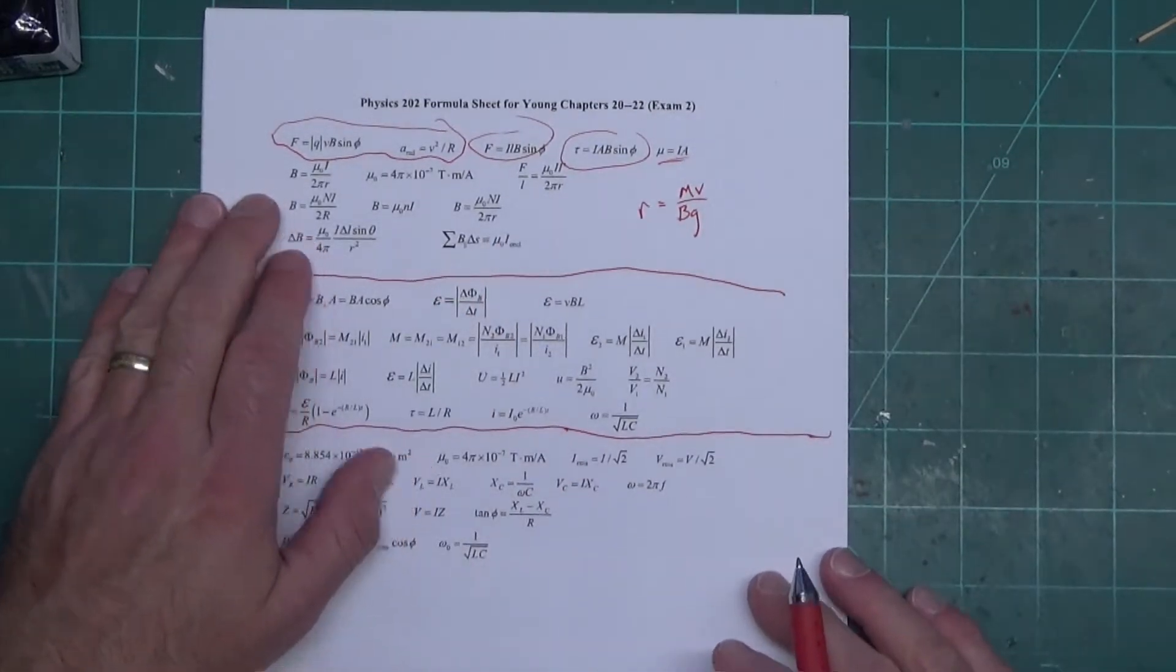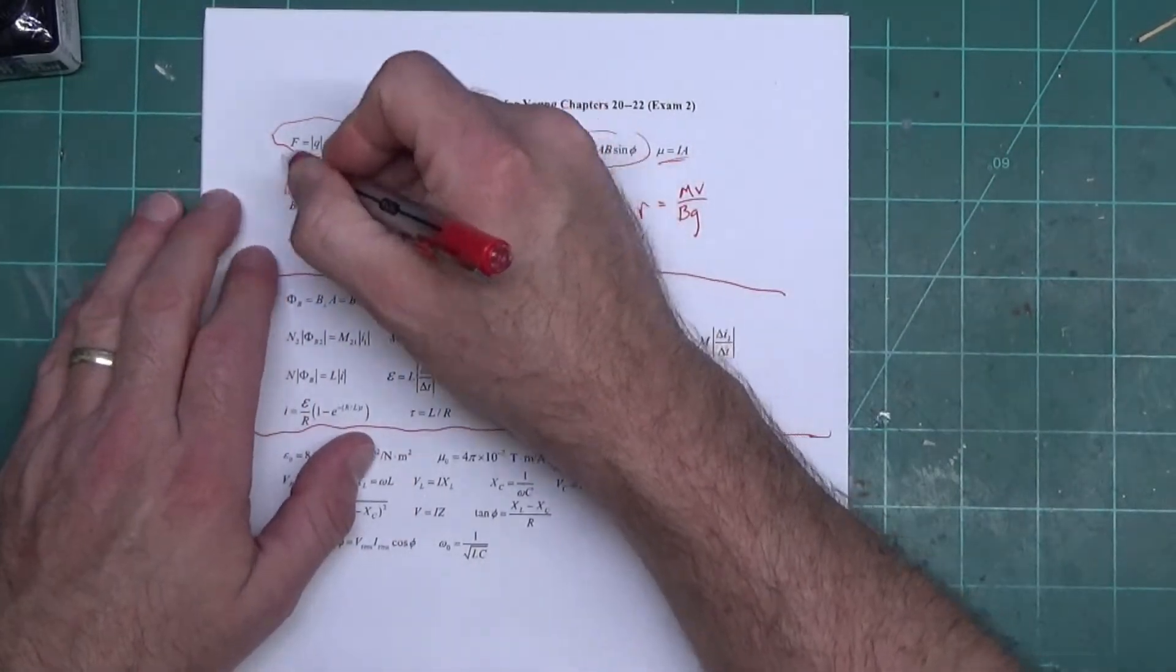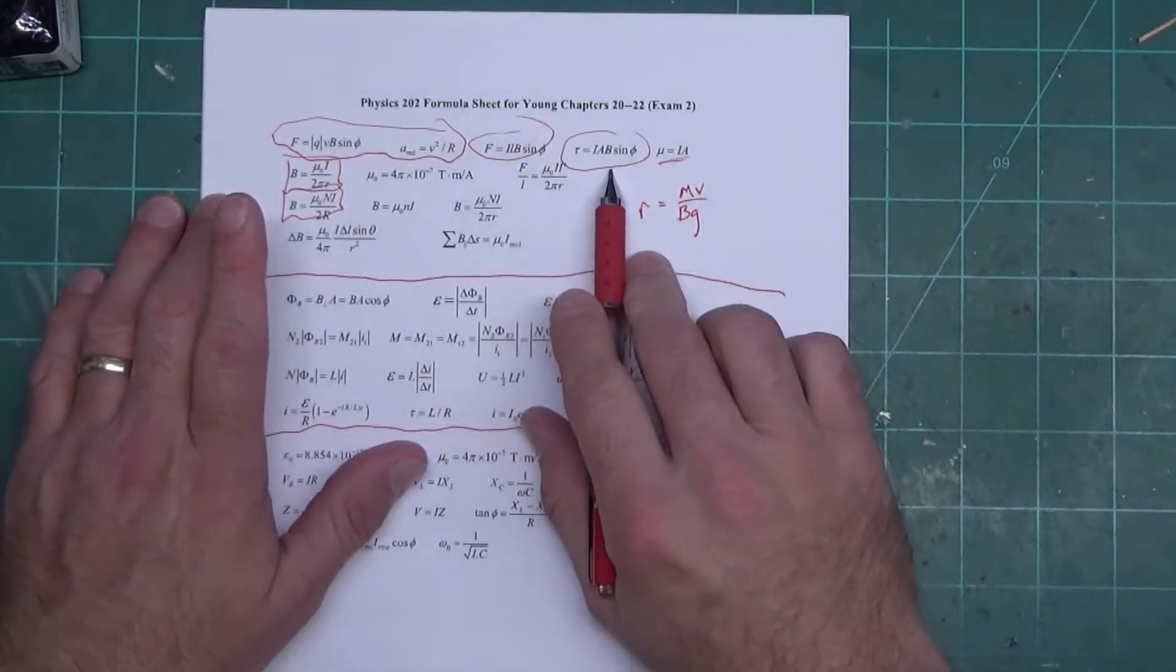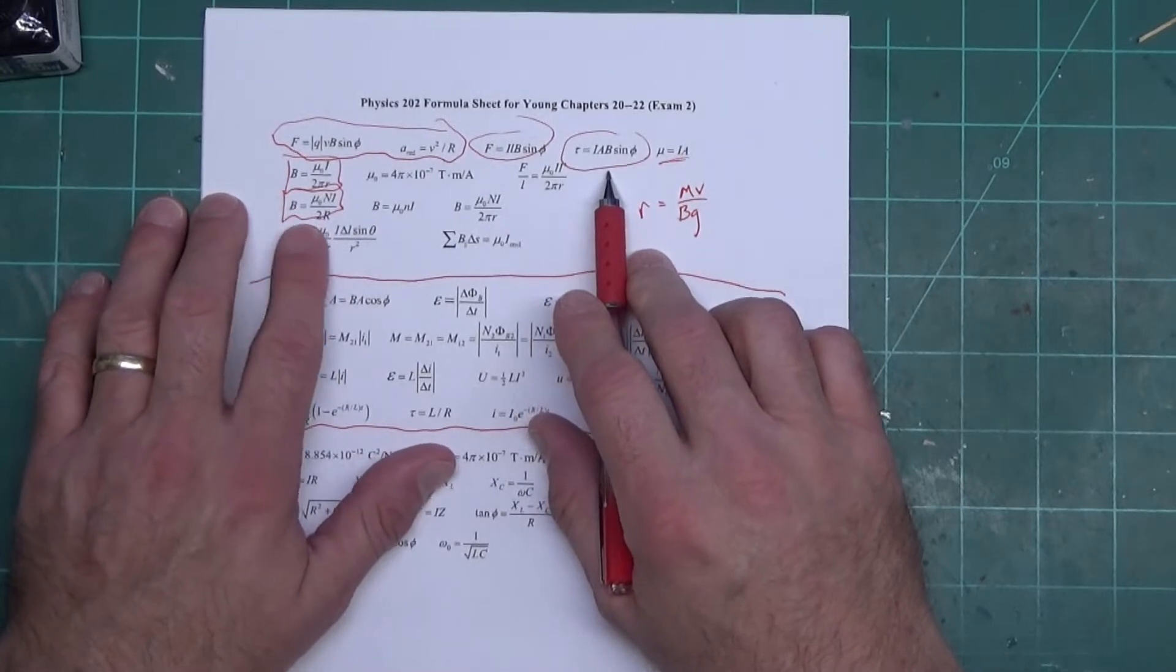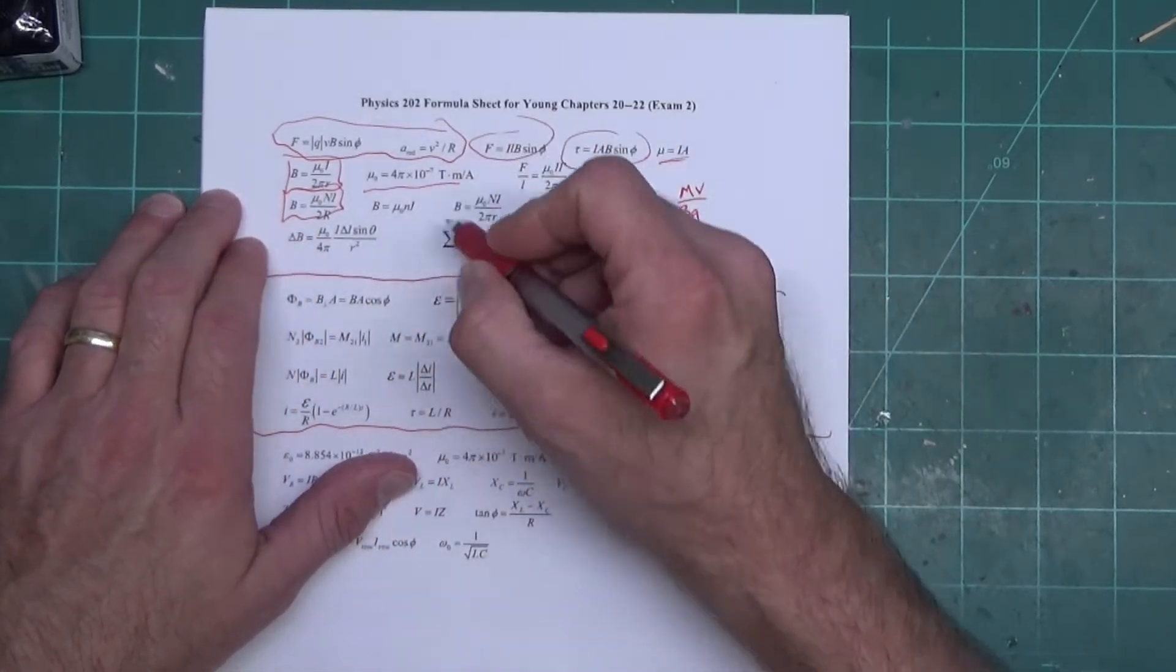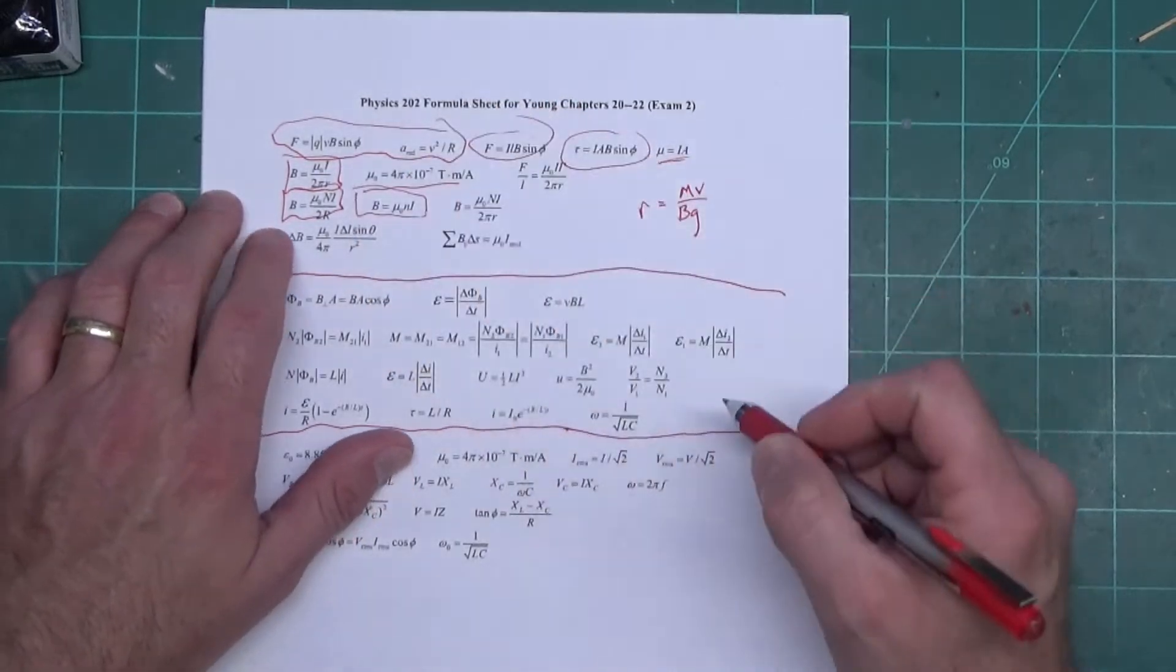This is the magnetic field on a long straight wire, magnetic field on a wire loop, torque on a wire loop - they're not the same equation. Here this is the value of the constant mu naught. This is magnetic field in a solenoid.